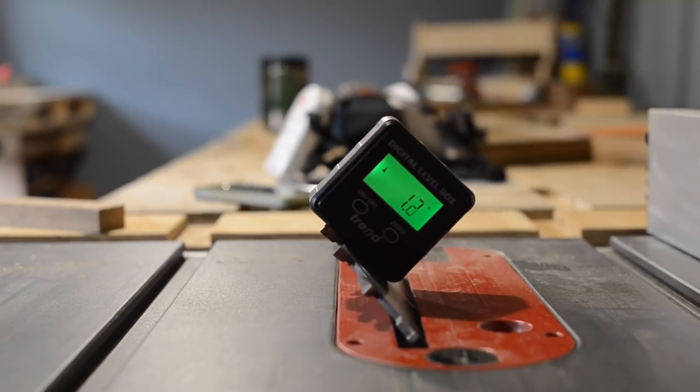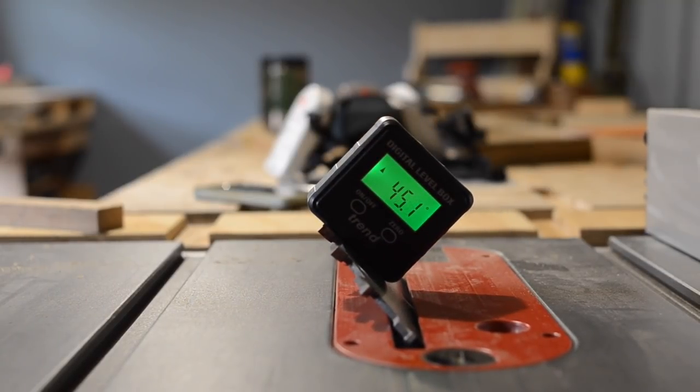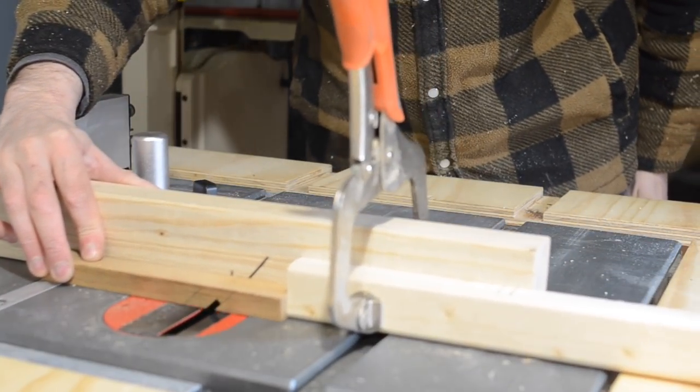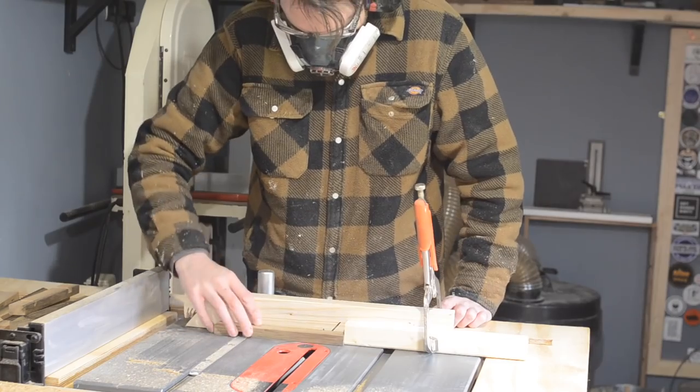I use my digital gauge to set the blade to 45 degrees, and then I could lower the blade again to the same height as before. I could then set up a stop block and make all the cuts in the same place as before.